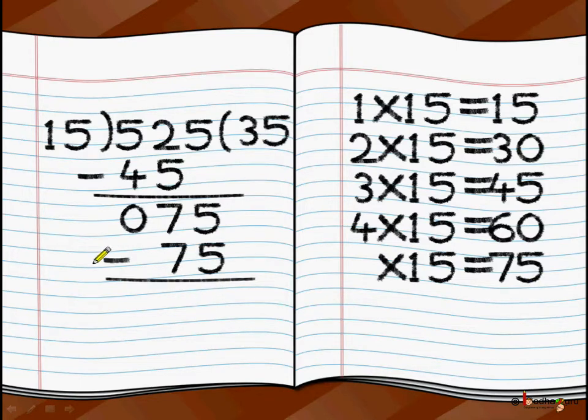And then we put a minus sign and 75 minus 75 is 0. So Jagan needs 35 bags to keep his entire harvest of 525 kg. He needs 35 bags assuming each bag takes 15 kg of wheat. Understood?